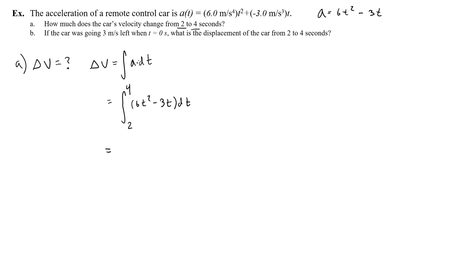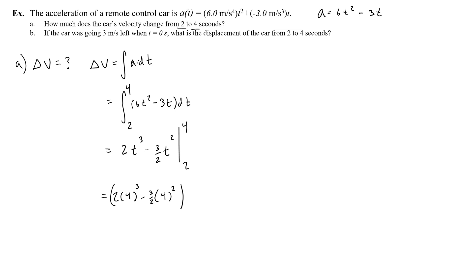Now I need to find the antiderivative and evaluate it from 2 to 4. The antiderivative of 6t-squared is 2t-cubed (6 divided by the new power of 3 equals 2). So the antiderivative is 2t-cubed minus three-halves t-squared (3 divided by the new power of 2). I then plug in 4 seconds minus the equation evaluated at 2 seconds: 2 times 2-cubed minus three-halves times 2-squared. This gives me the change of velocity.